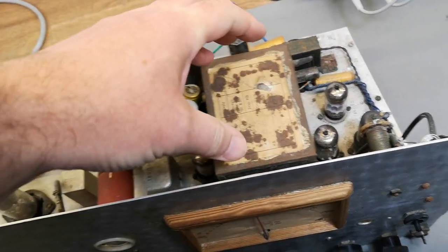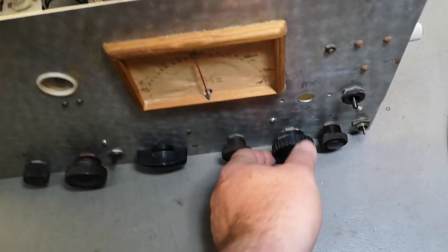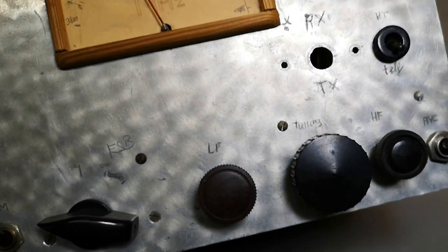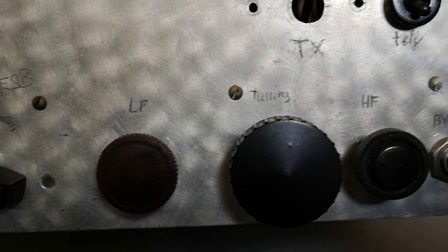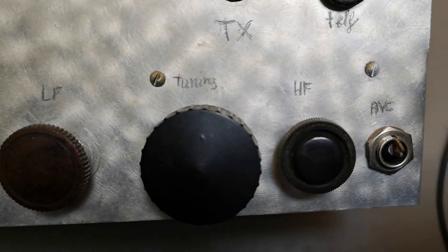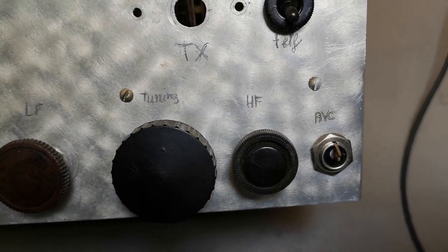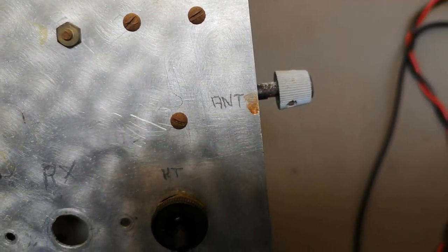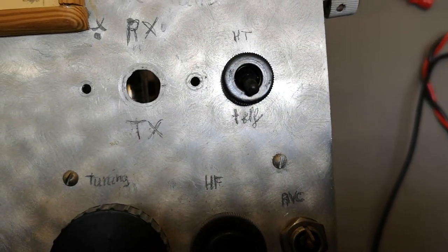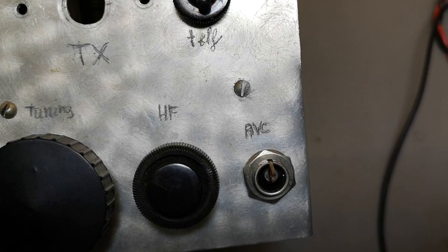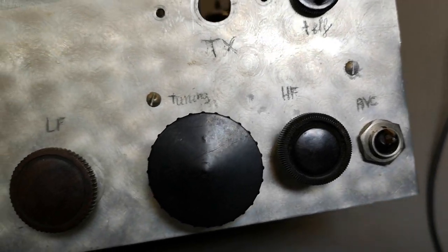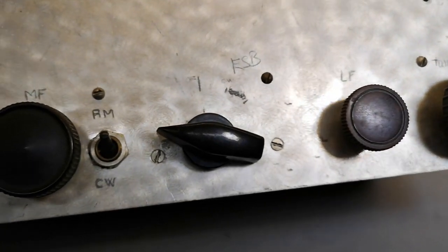This is obviously the master tuner. I like this. Everything here is written on the front. That will be tuning, LF of course is the audio frequency band, HF is the frequency band you are receiving, here is tuning for the antenna, and that is between loudspeaker or headphones.